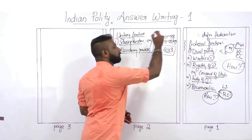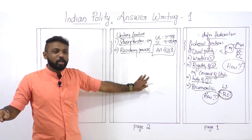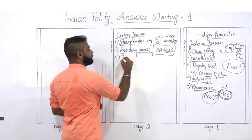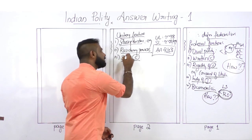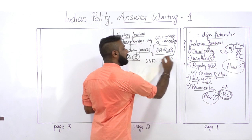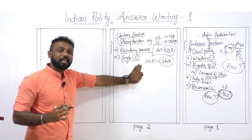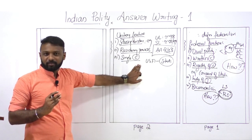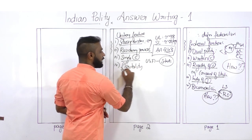Another unitary feature is a single Constitution — both the center and state must act according to this single Constitution. In the USA, each state has a separate constitution, but in India there is only one Constitution. Parliament has more power to amend the Constitution while states have limited power, again showing a centralizing tendency.